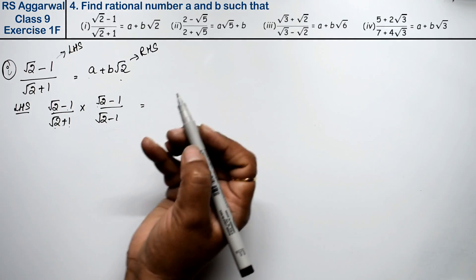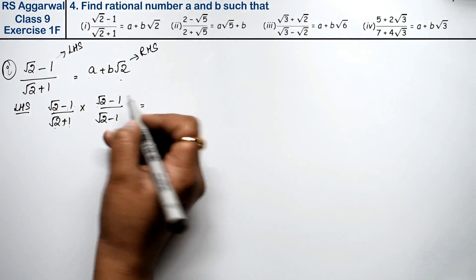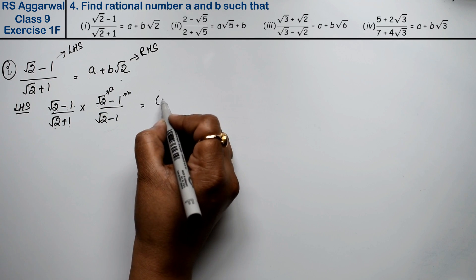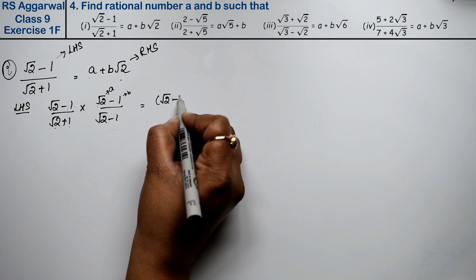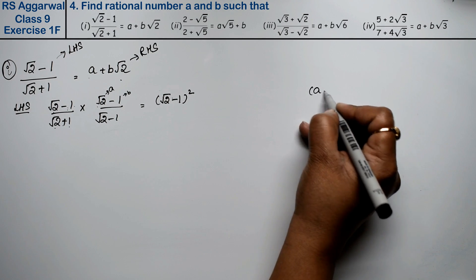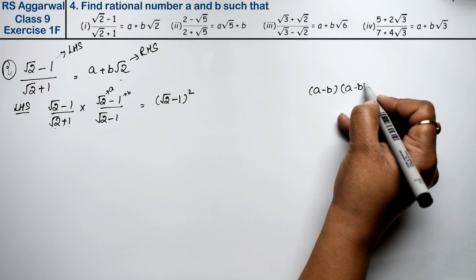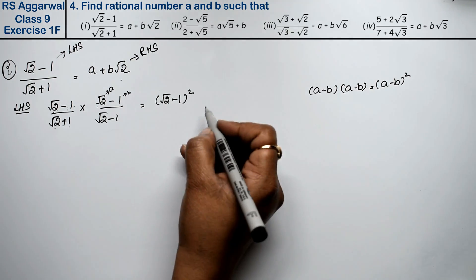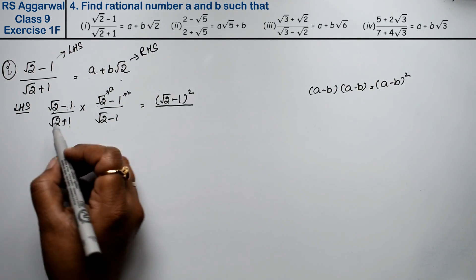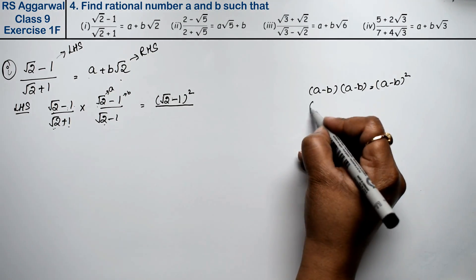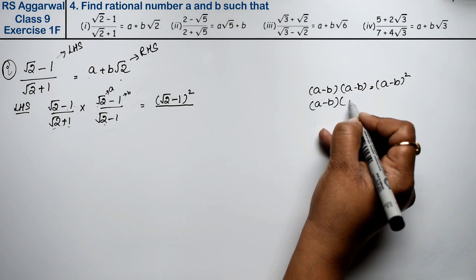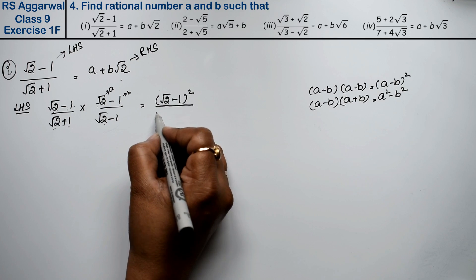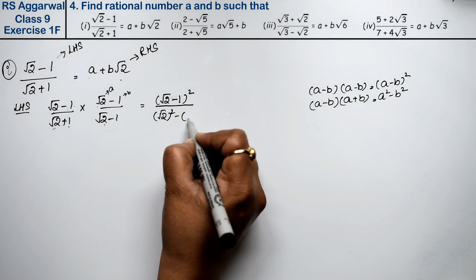In the numerator we have root 2 minus 1, so that becomes root 2 minus 1 whole square. In the denominator, we have A minus B times A plus B, which gives us the formula A squared minus B squared. So the denominator becomes root 2 squared minus 1 squared.